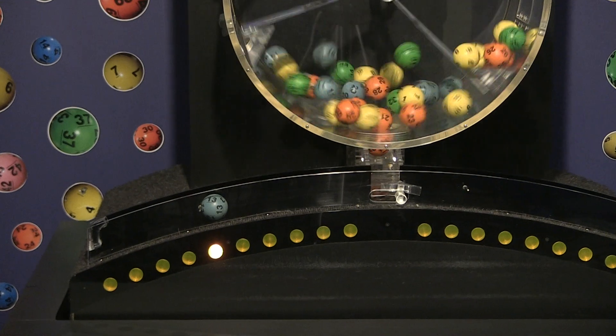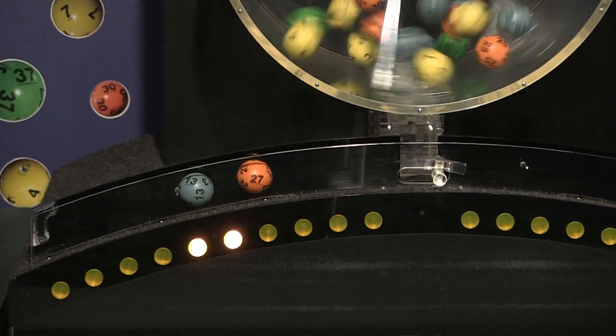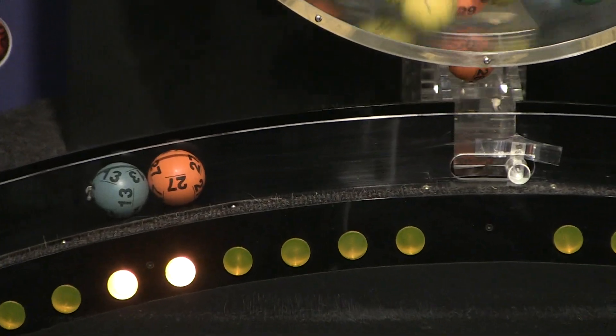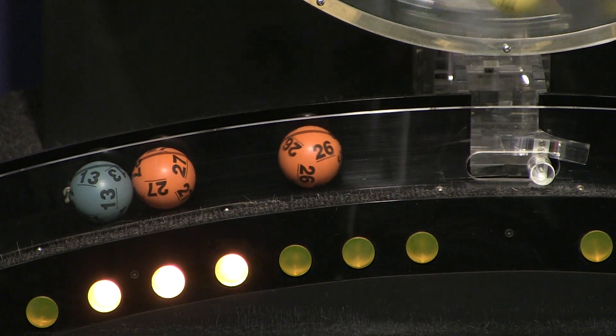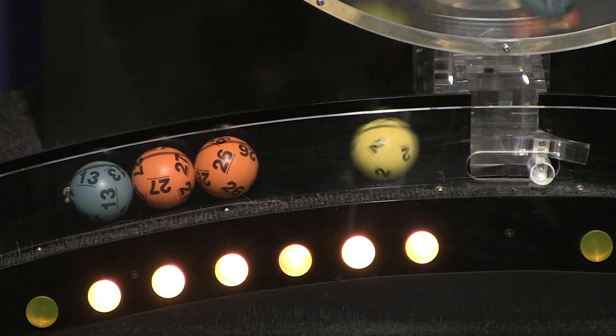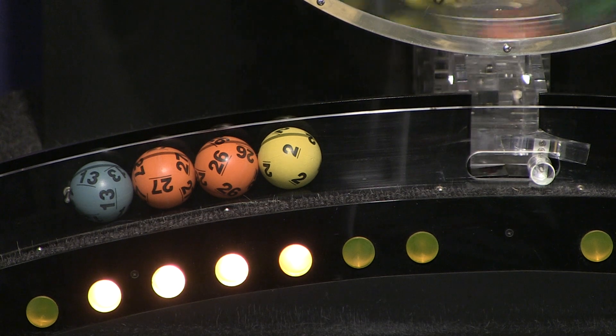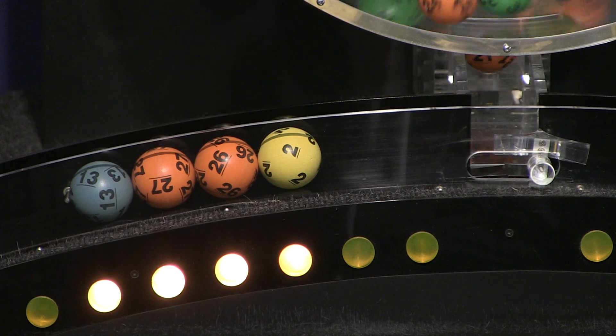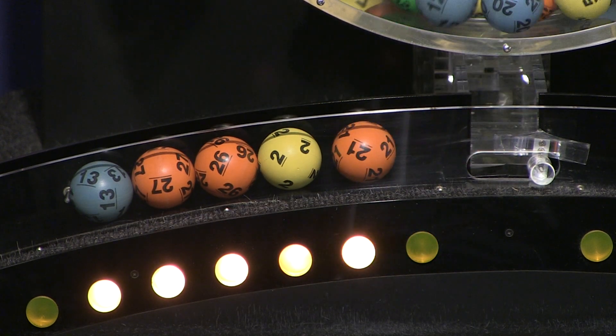Our first number up is 13 and here comes 27. Following that is 26. If you've matched these three numbers you've already won a prize. Our next number is 2 and finally 21.